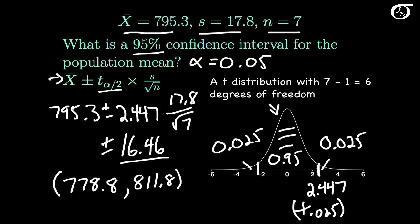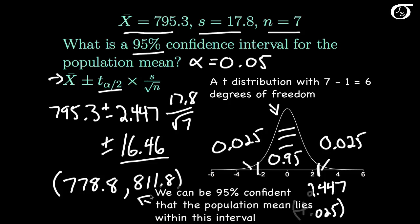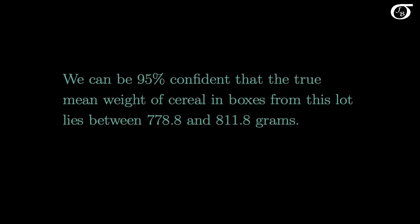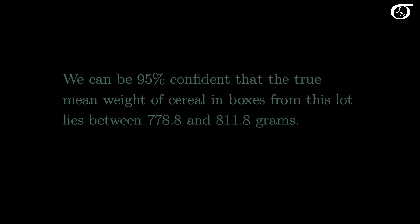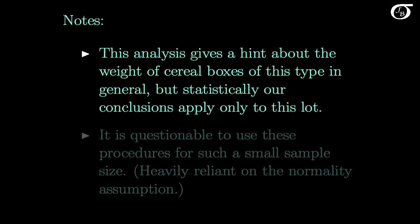The interpretation of a confidence interval is very important. We are 95% confident that the population mean mu lies somewhere within that interval. In context, we can be 95% confident that the true mean weight of cereal in boxes from this lot lies between 778.8 and 811.8 grams. A note: this analysis gives a hint about the weight of cereal boxes of this type in general, but statistically our conclusions apply only to this lot — only to the population from which we drew our sample.